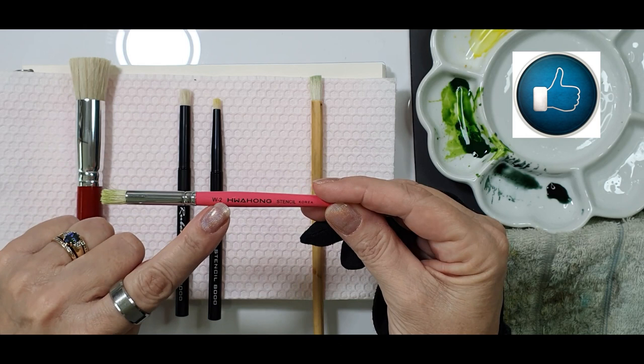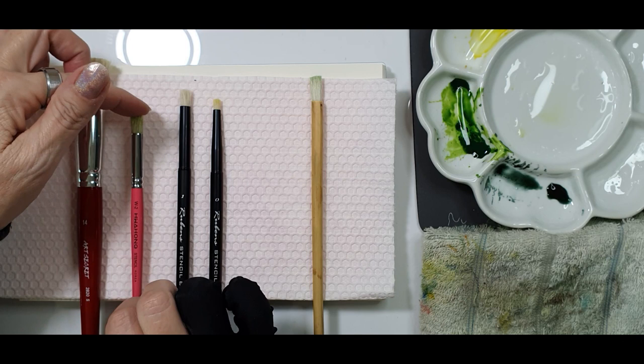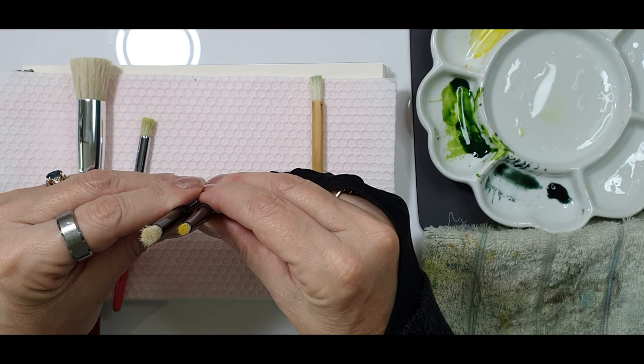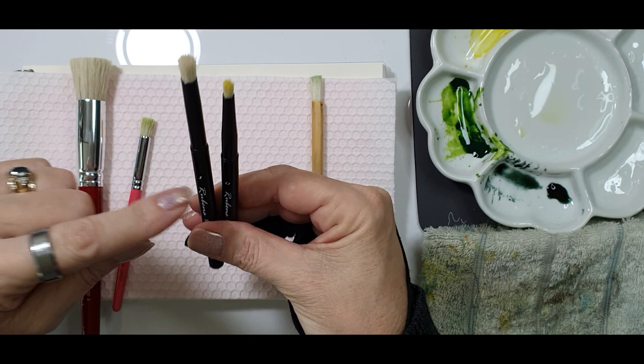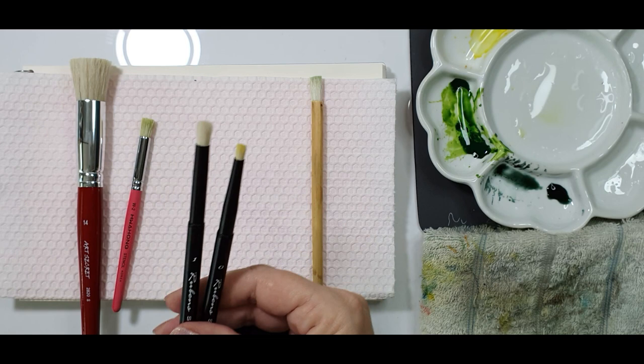The next one is the Wahong. This is a gorgeous little brush. I use that one the most. Also hog hairs and very versatile. The Rubens number 1 and 0 are new brushes and we're still working them in. They're also hog hair but I think they feel a little bit softer than the Wahong and the Art Secret.